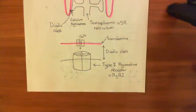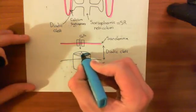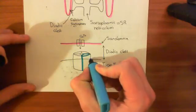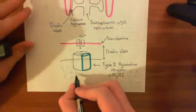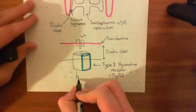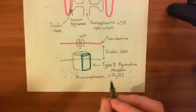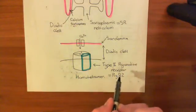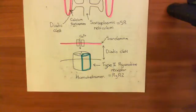The ryanodine receptor is a tetramer — it's made up of four ryanodine proteins. Here in blue is a quarter of the ryanodine receptor, a single ryanodine protein. There are three genes for ryanodine proteins: type 1, type 2, and type 3. When you form a ryanodine receptor, you can only form homotetramers — four proteins encoded by the same gene. So a type 2 ryanodine receptor is four type 2 ryanodine proteins assembled together.